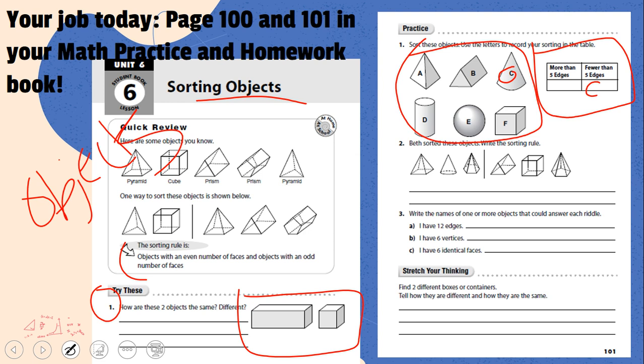And then, the last question that I'm going to want you to do today is number two. So, you're only doing three questions today, and for number two, you just have to write the sorting rule. Remember to use the word objects. And you need to try and figure out what's different between these ones and these ones. You can use this to help guide you.